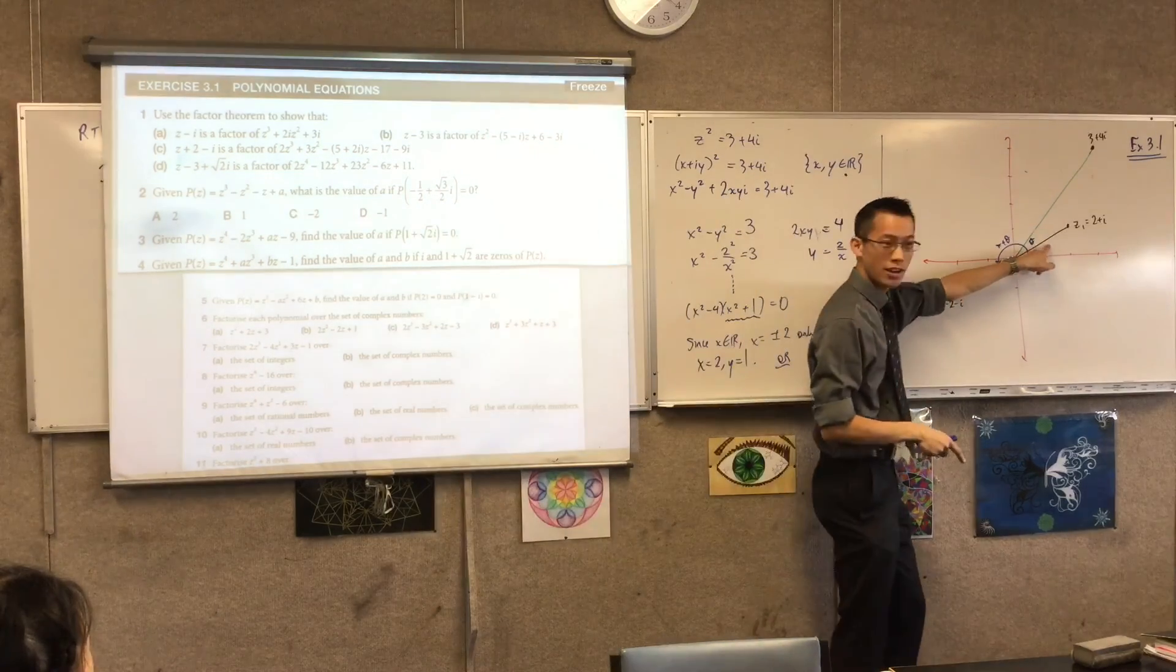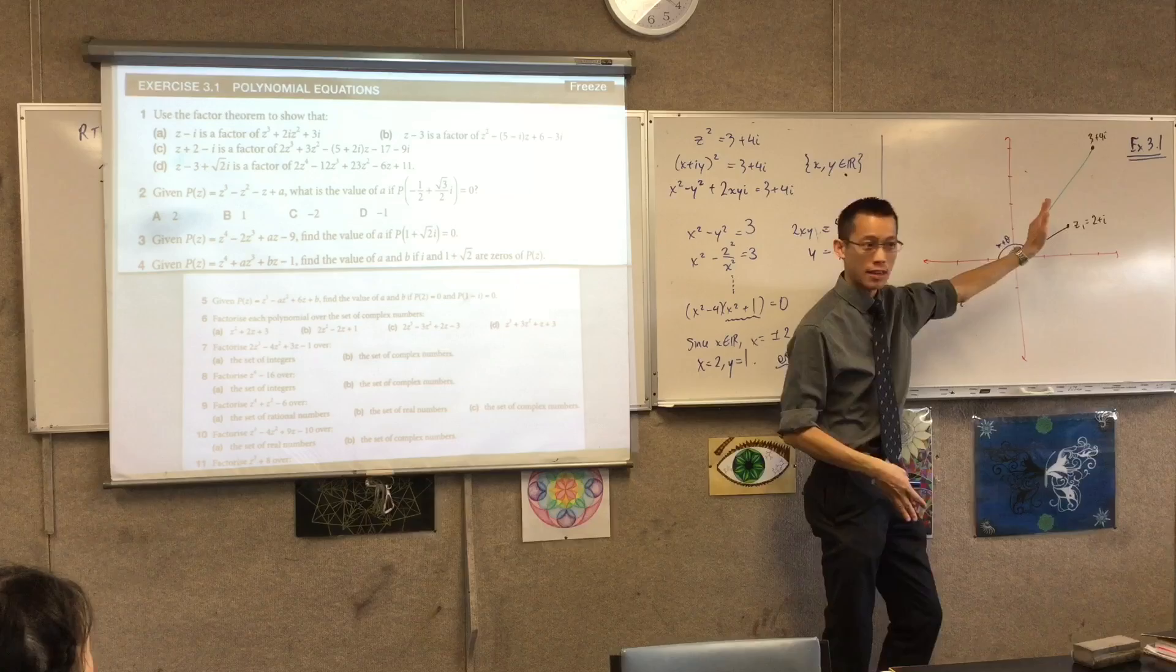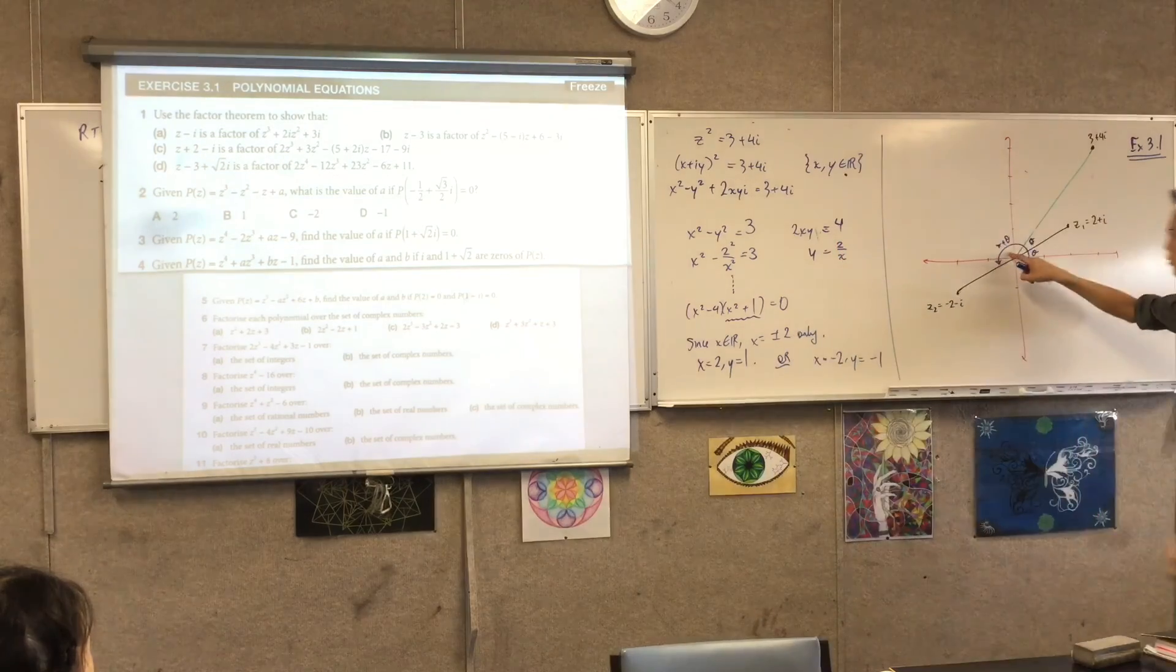And when you multiply a complex number, what do you do to the arguments? You add the arguments. You add arguments, right? Remember this? You add args. So you get theta, you add it again, and you are at 2 theta. That makes sense. What about this other one? What happens to here?